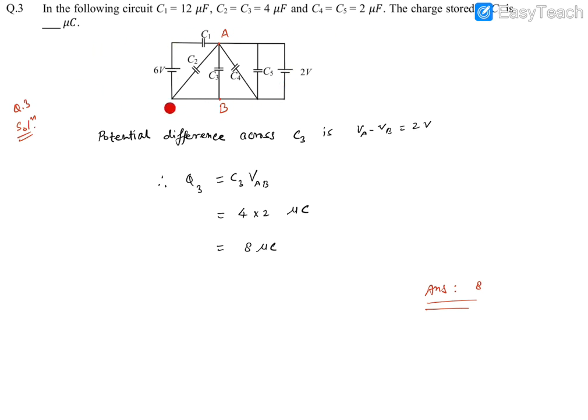Now this is a battery of 6 volts, this is a battery of 2 volts, this is C5, C4, C3, C1. Now it's asking for the charge stored in C3. Now you see the C3...